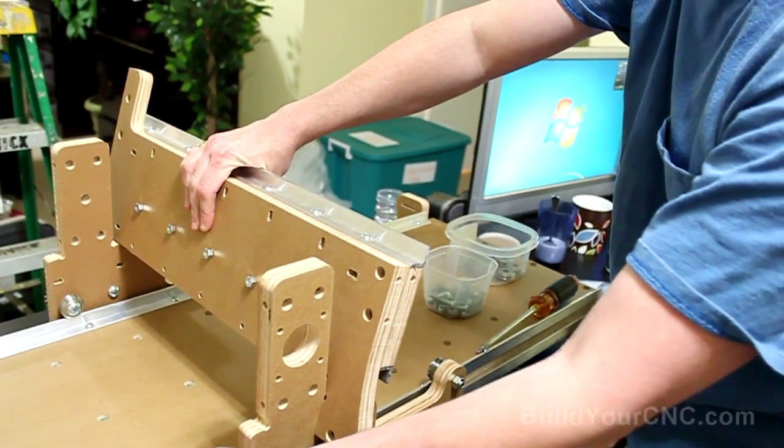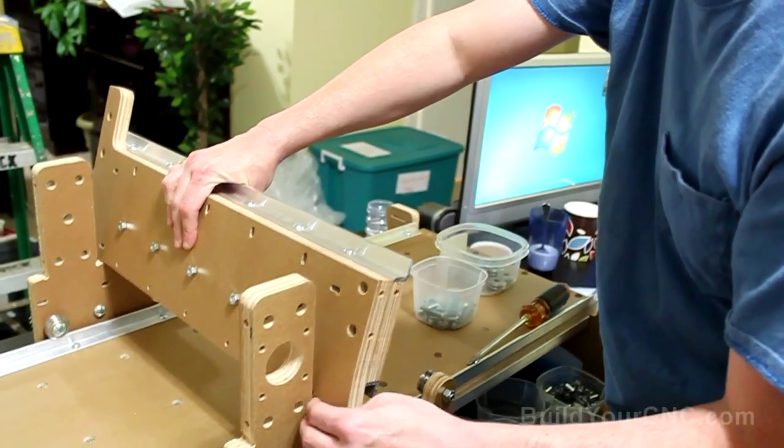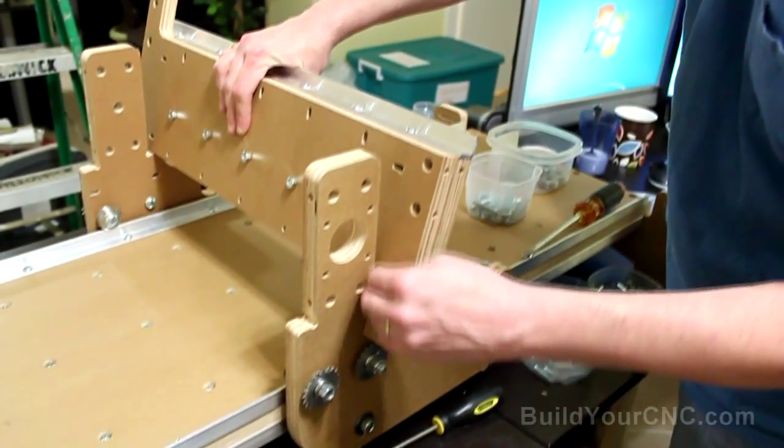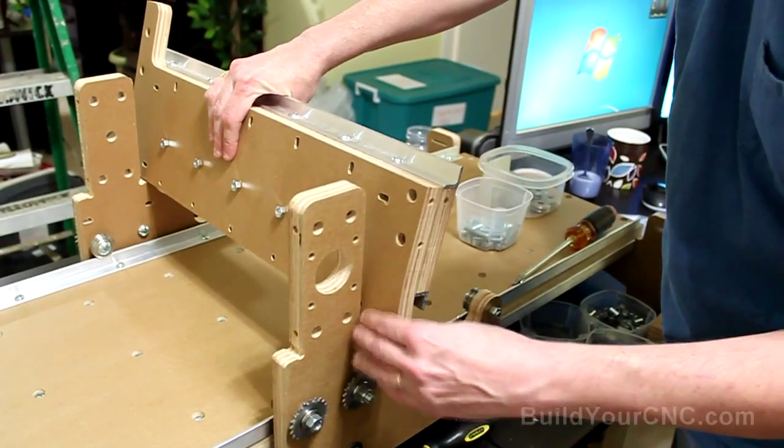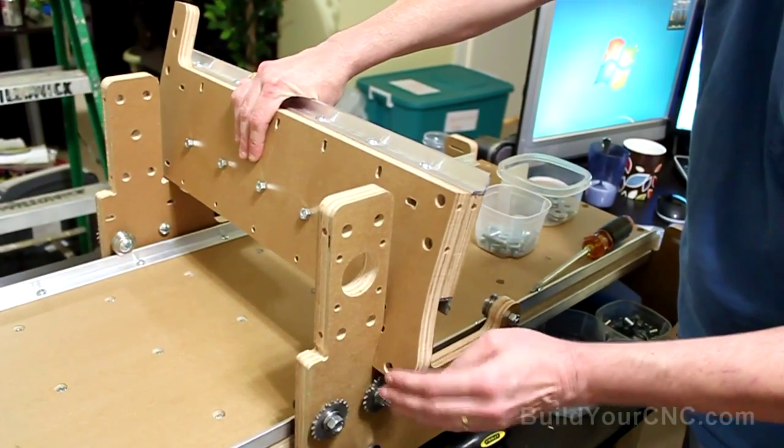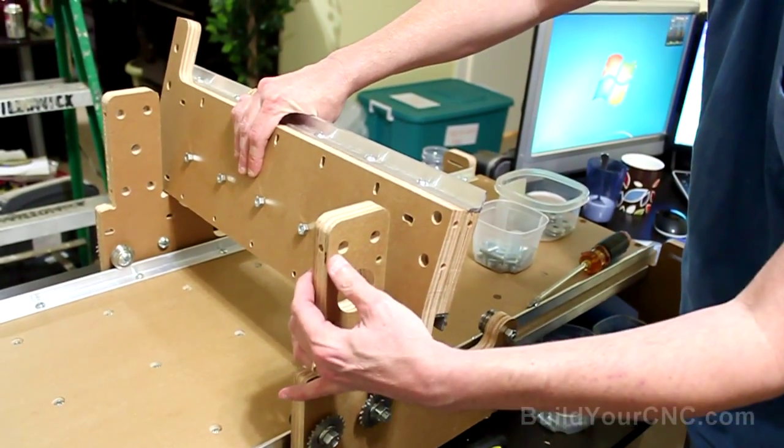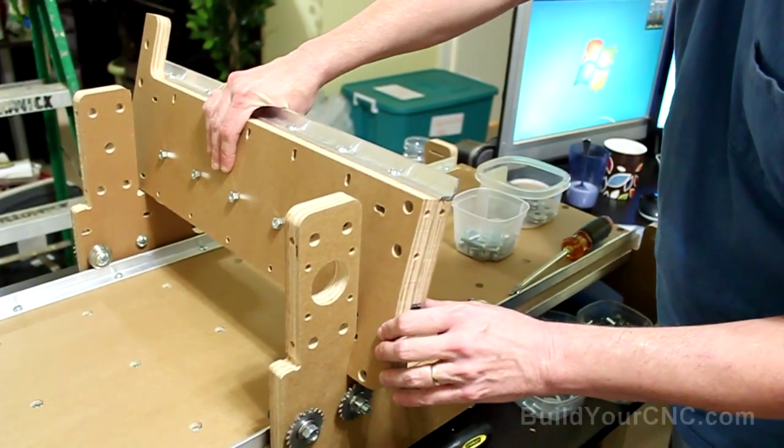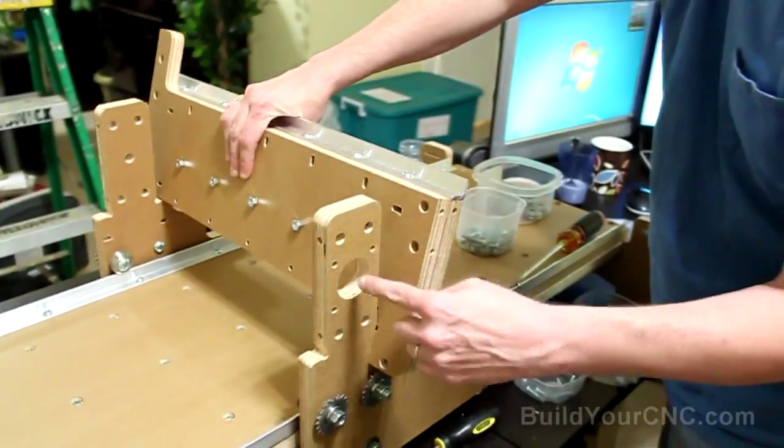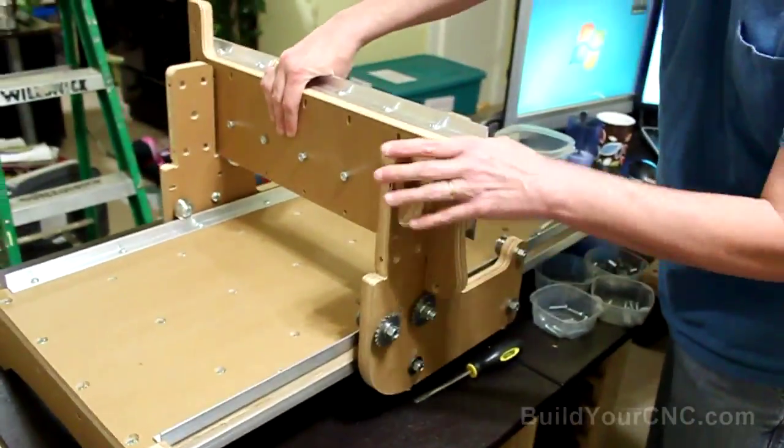then you need to scoot the rails in just a little bit to allow the bridge piece to go around the two gantry sides. This bridge piece here, or the wraparound here, further stabilizes the gantry side so it doesn't do any vibrations axially along the Y axis.